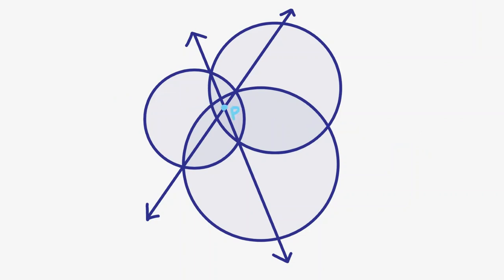Let P be the intersection of two of these radical axes. Then P has the same power to these two circles, and similarly for these two circles. But wait, that also means P has the same power to these two circles, so it lies on the radical axis as well.